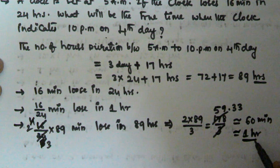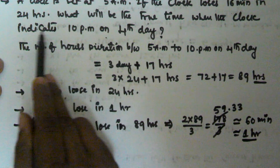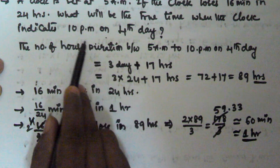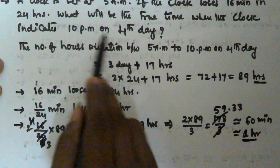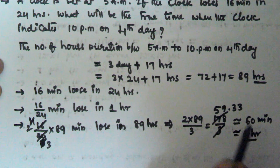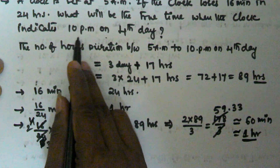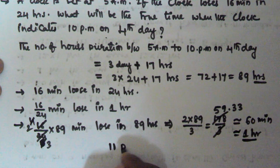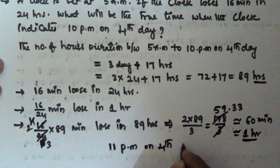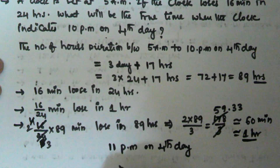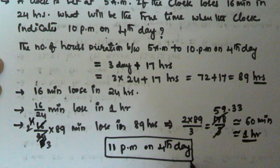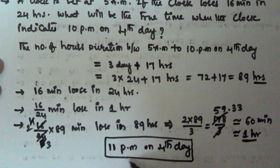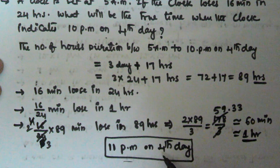What we have to find is the true time when the clock indicates 10 p.m. on the 4th day. From 5 a.m. today to 10 p.m. on the 4th day, the watch lost 1 hour. So to get the true time, we add this 1 hour to 10 p.m. on the 4th day. The correct true time is 11 p.m. on the 4th day. I hope you got this — thank you very much for watching, and please subscribe to my channel.